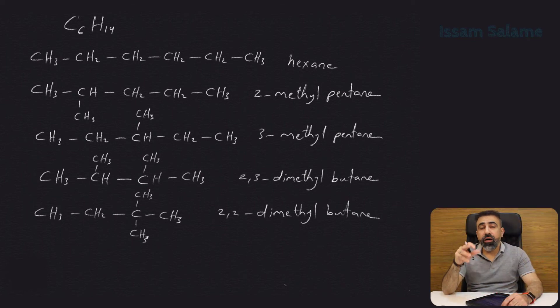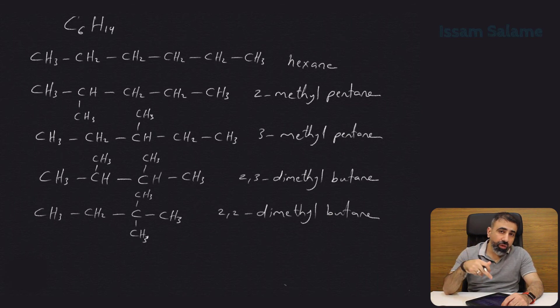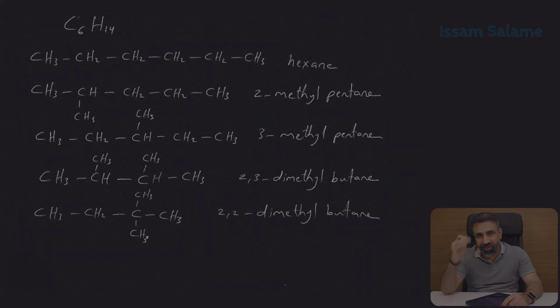These are all the possible isomers for C6H14. If you think you can have more isomers, please try to draw them and name them. If you get a different name than these, then it's an isomer—please write its name in the comment section. But I don't think you can find more isomers for C6H14. I hope you like this video and see you in more videos. Good luck.